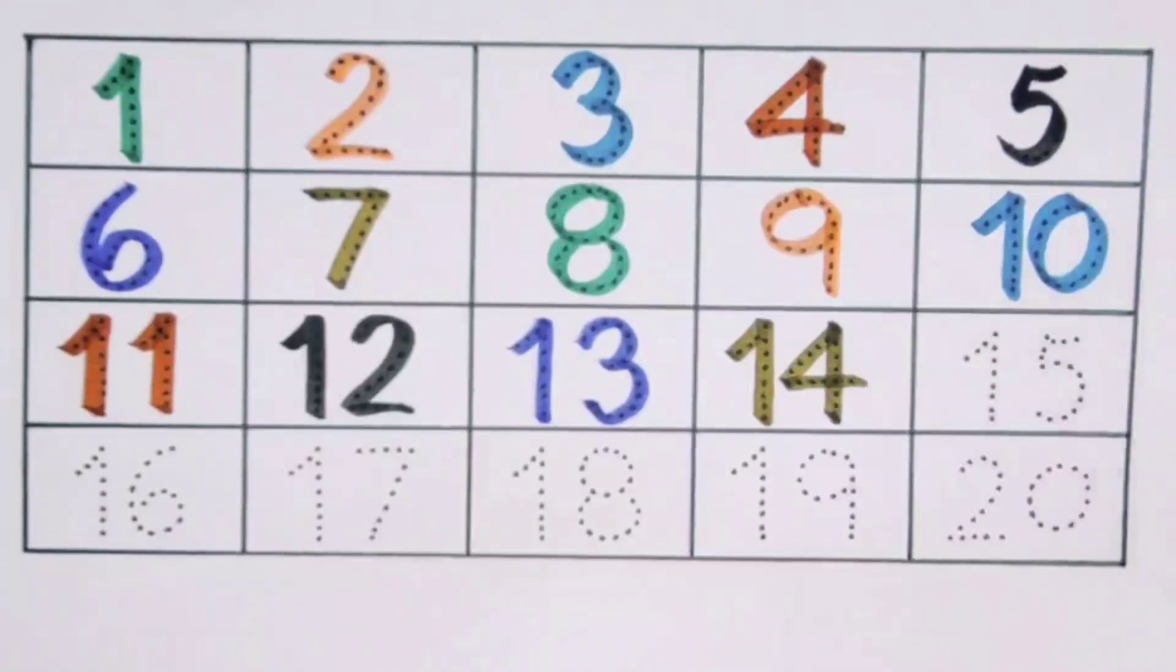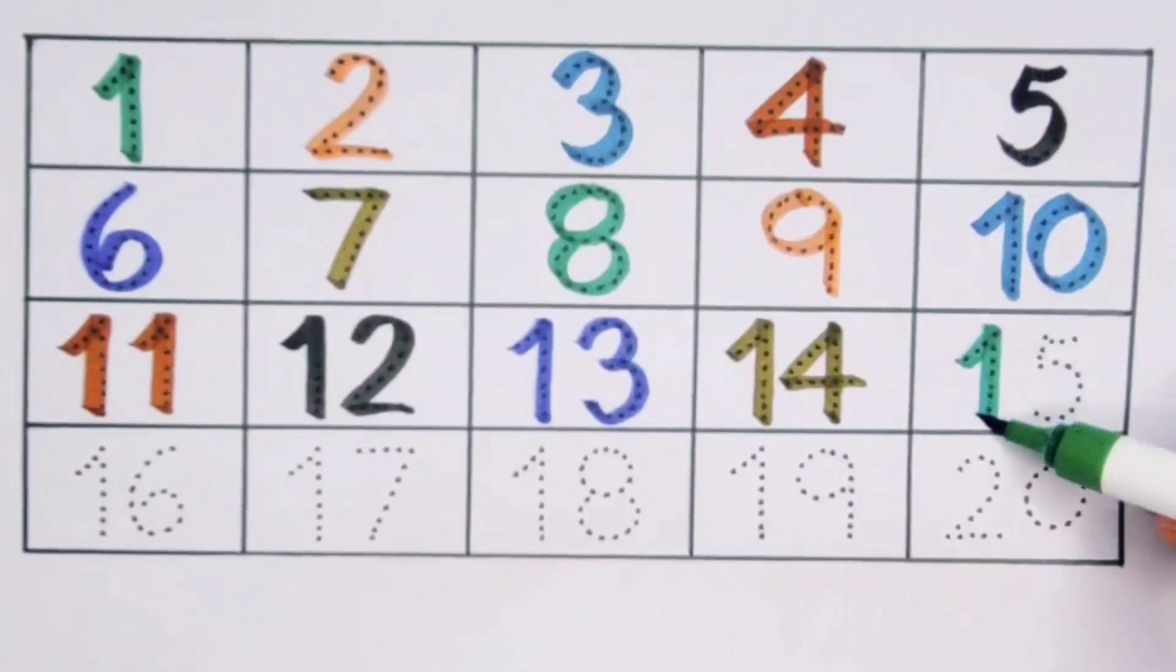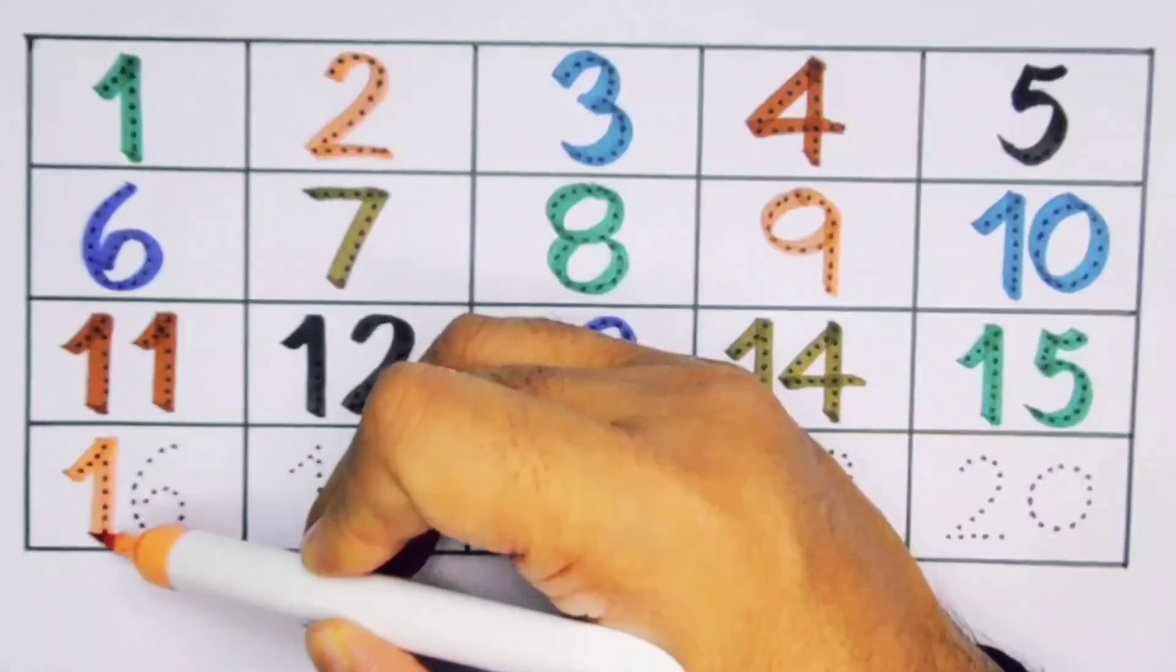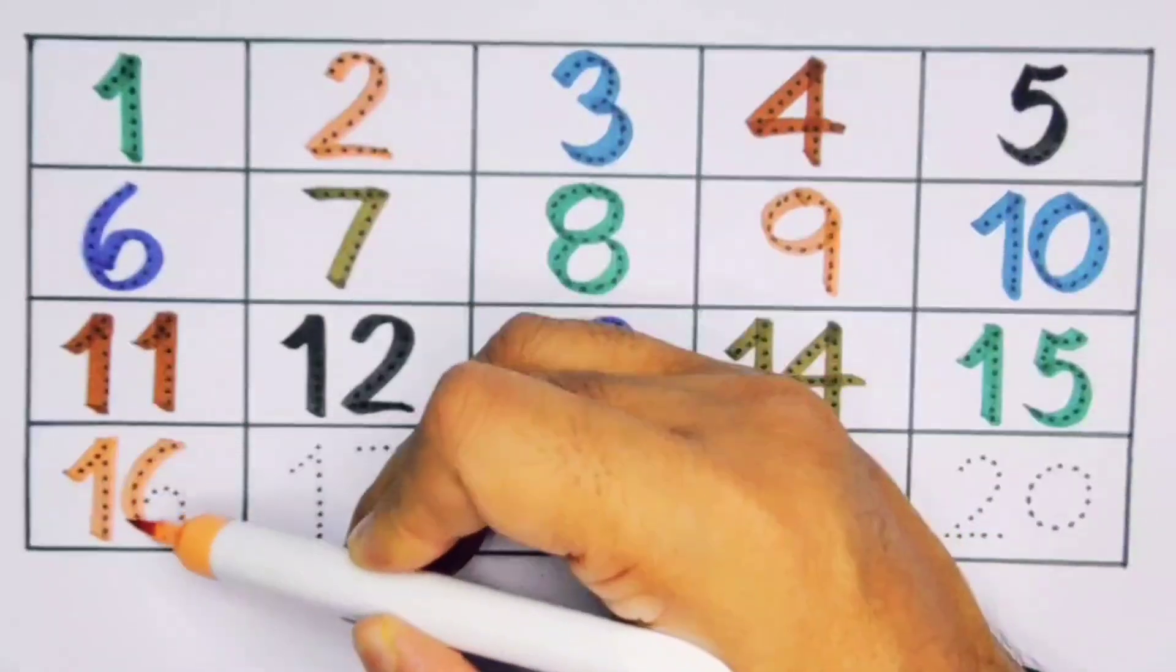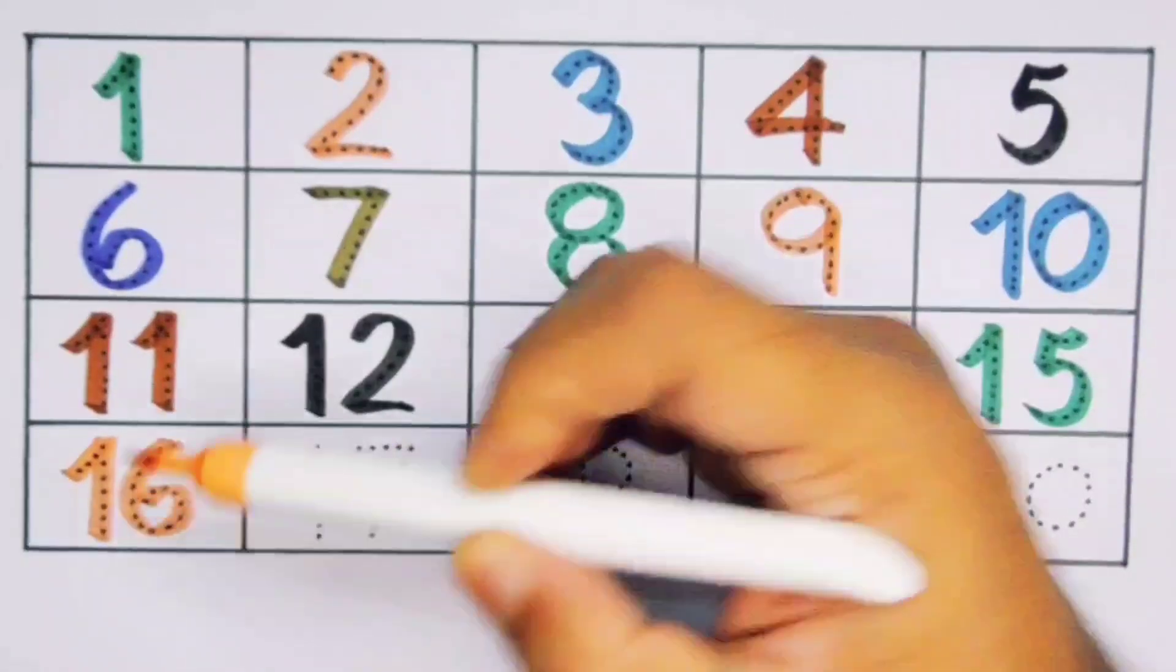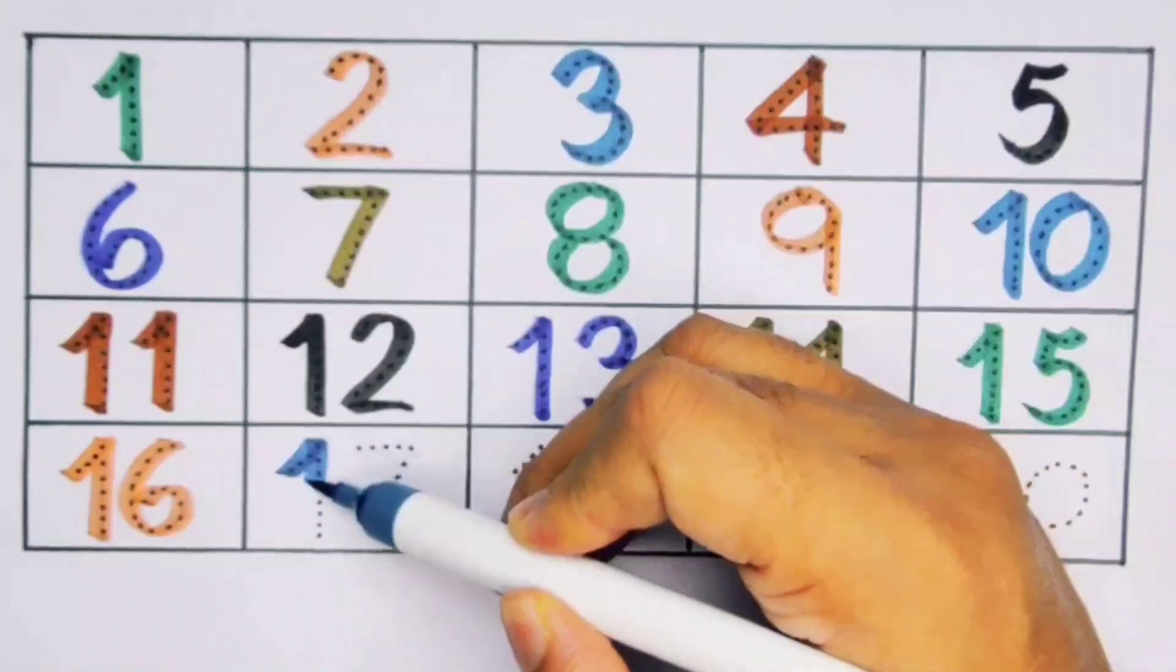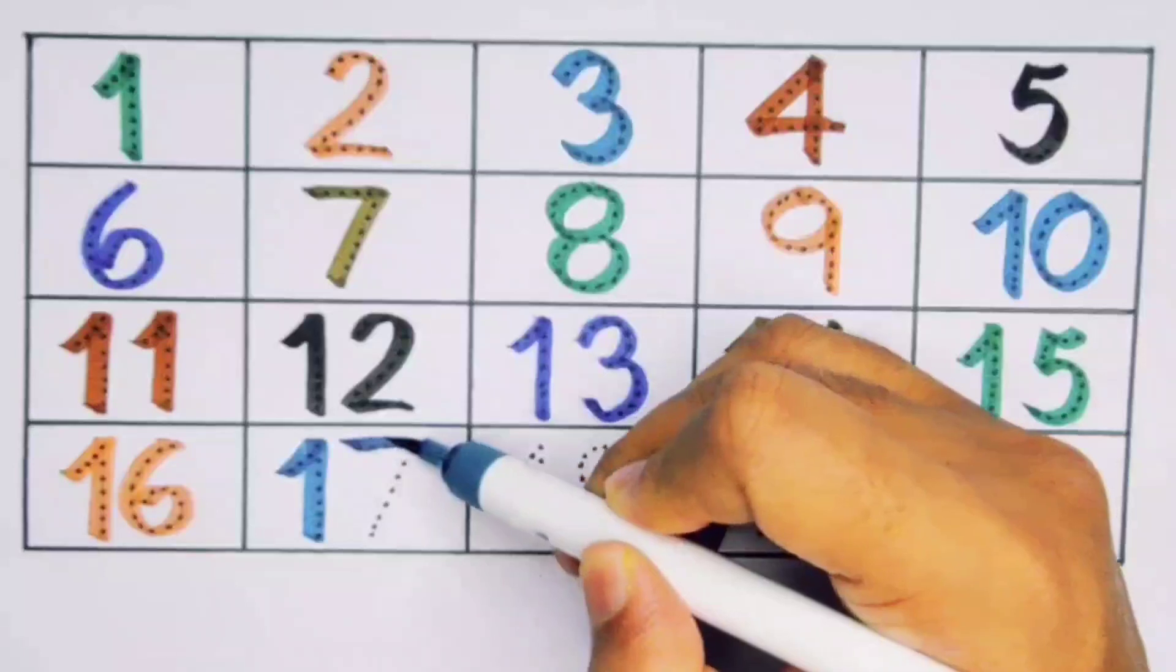Next, 15, one-five, number 15. Next, 16, one-six, number 16. Next, 17, one-seven, number 17.